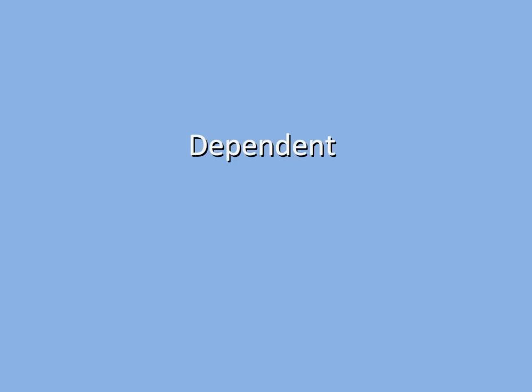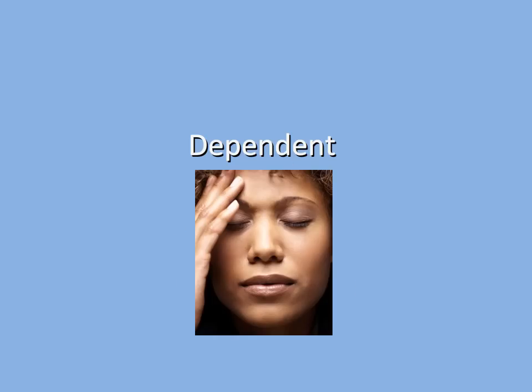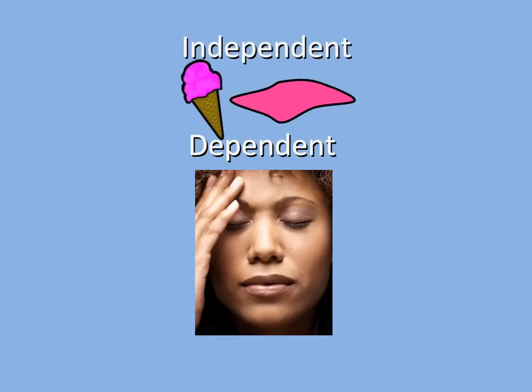There's another variable called the dependent variable. If we change the independent variable, the dependent variable will change as well, but we cannot directly change the dependent variable. What is the dependent variable in our experiment? The headache. Per our hypothesis, if we use melted ice cream there should be no headache, but if we use frozen ice cream there should be a headache. The headache variable depends upon the ice cream variable.